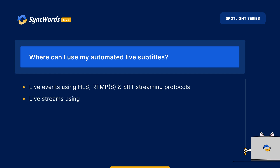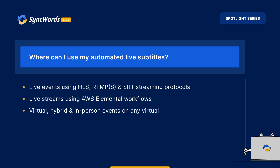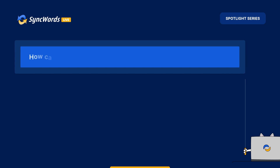Live streams using AWS Elemental workflows. Virtual, hybrid, and in-person events on any virtual event platform. How can real-time AI subtitles be delivered?